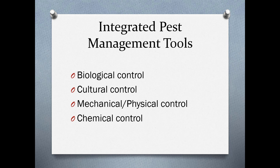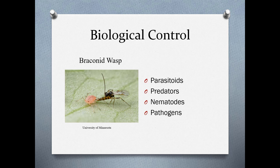The tools in your IPM toolkit are biological control, cultural controls, mechanical controls, and chemical controls. For biological control, you have parasitoids, predators, nematodes, and pathogens—for example, a wasp that is a parasitoid of aphids. It's really important that if you're bringing in biological controls in a greenhouse situation, you don't use pesticides at the same time, because you will be killing the beneficial organisms along with the pests.